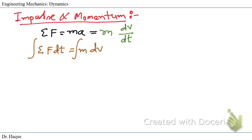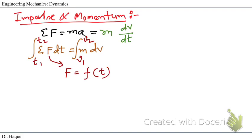Setting the limits from time t1 to t2, the initial velocity at t1 is v1 and the final velocity at t2 is v2. If F is a function of time, it is straightforward to integrate with respect to dt. Alternatively, if F is constant, we can take it outside the integral and simply integrate dt.